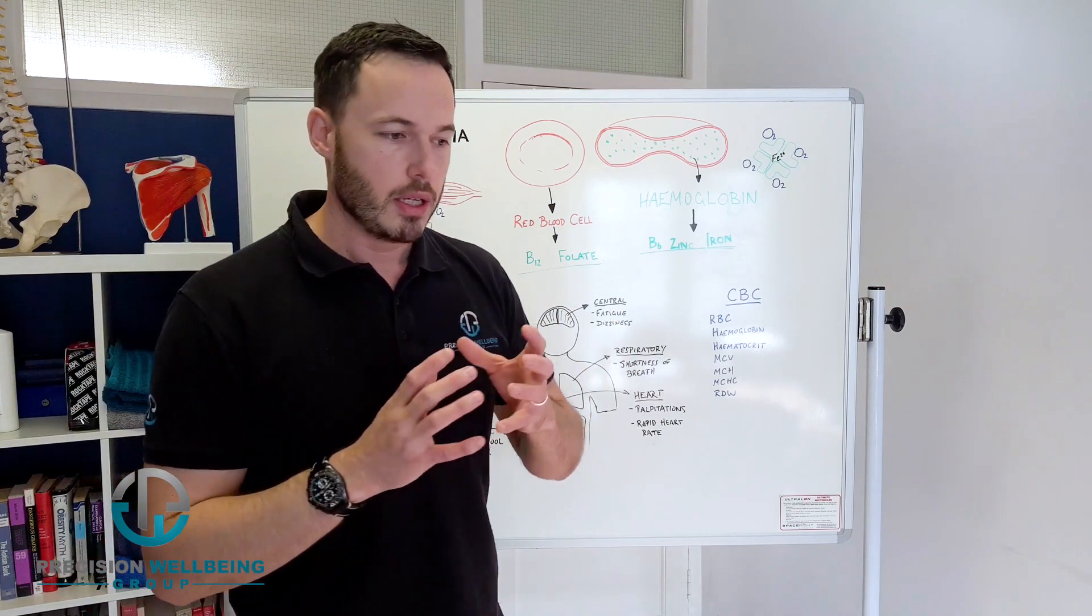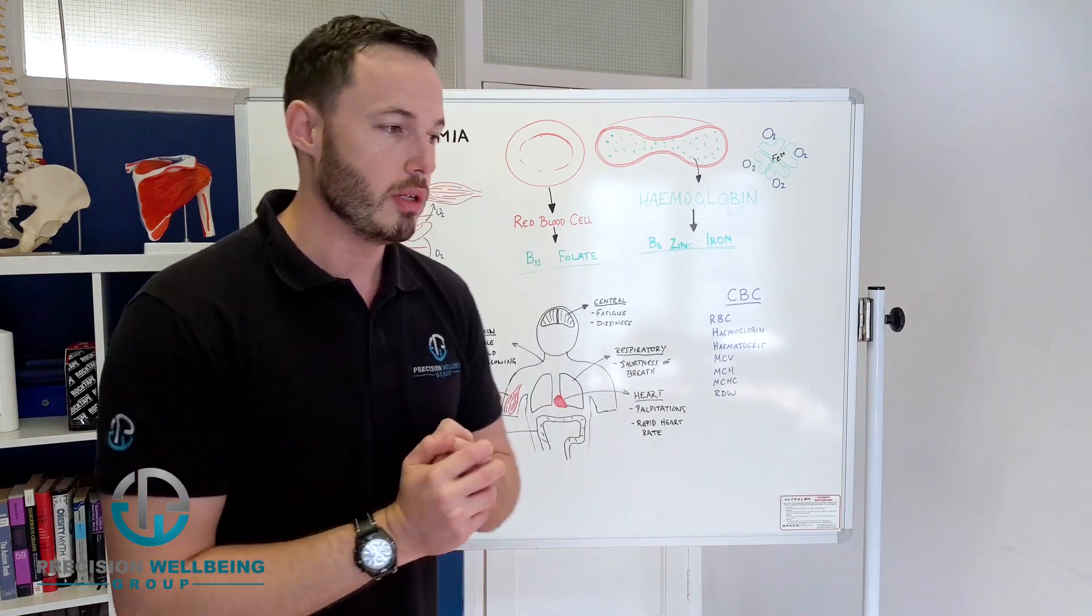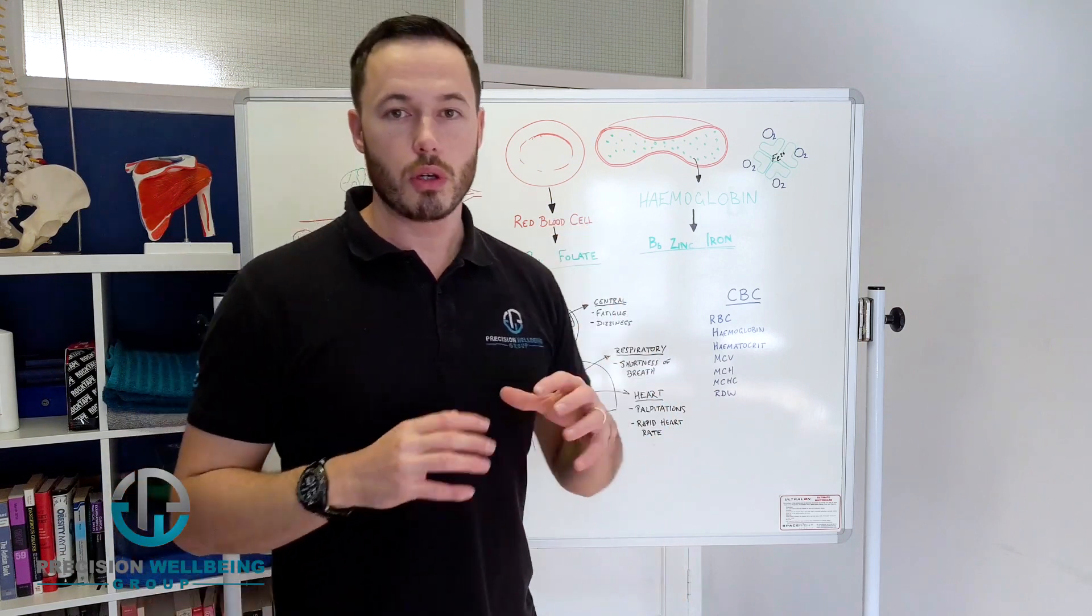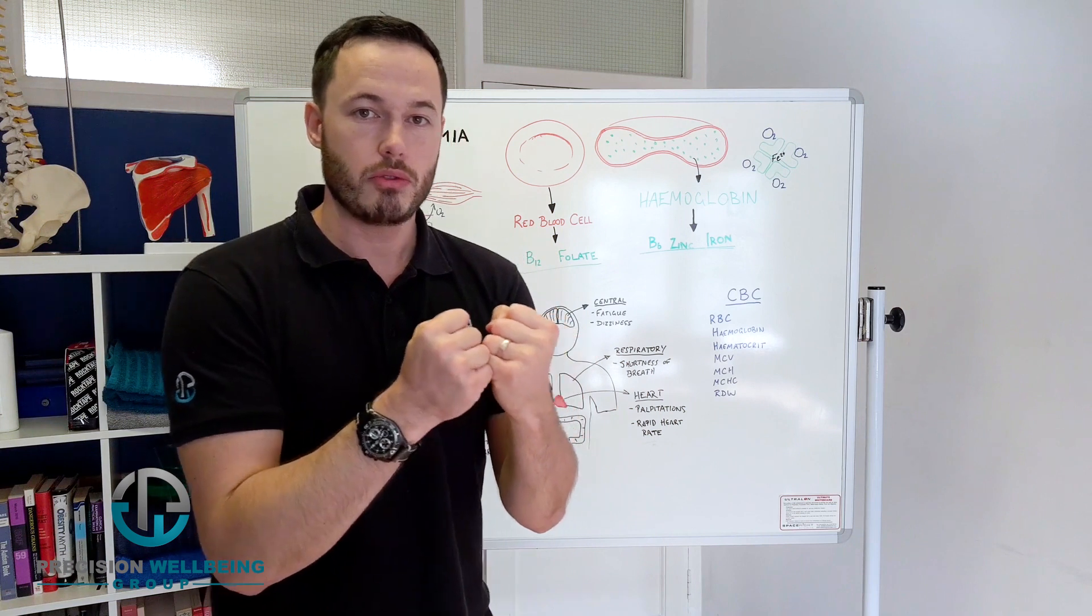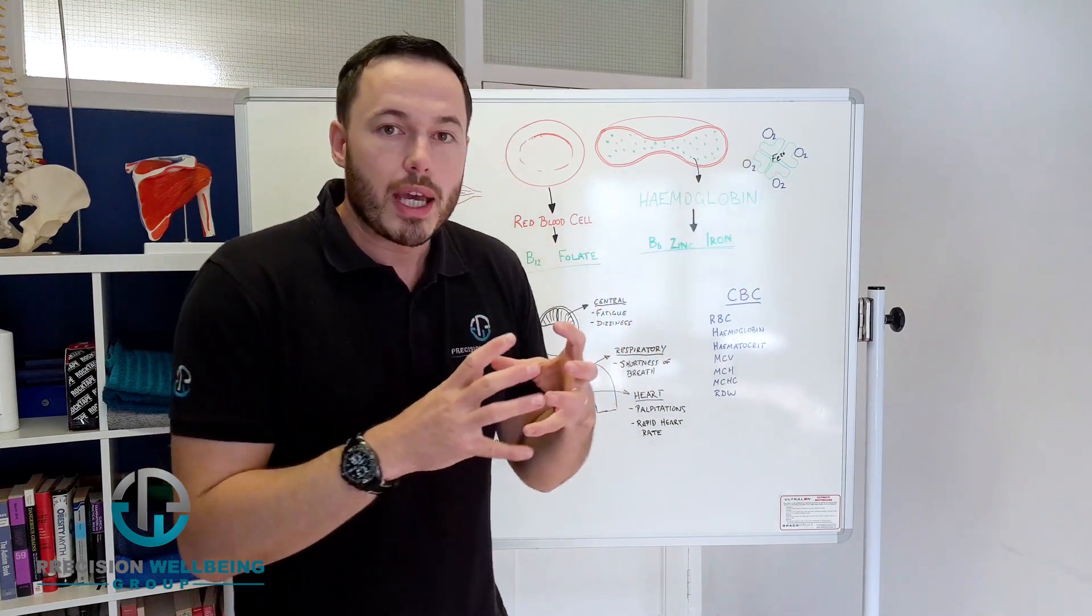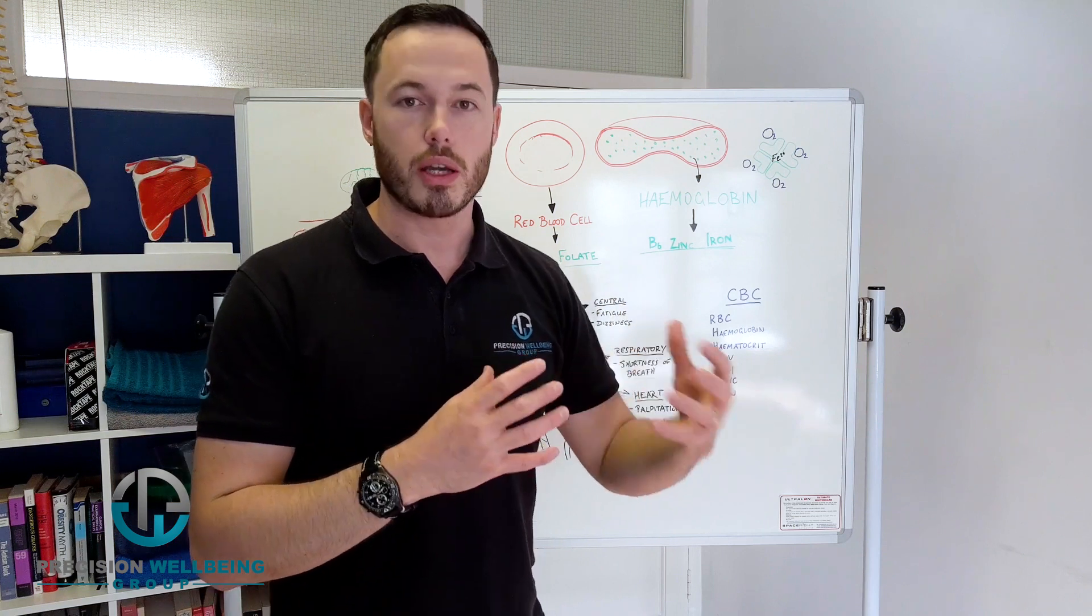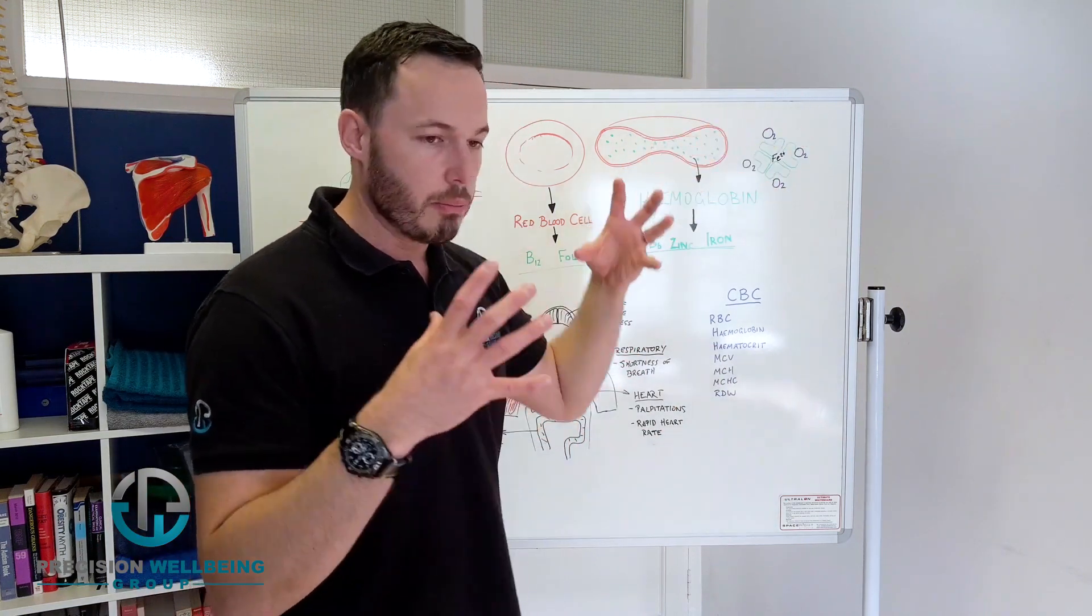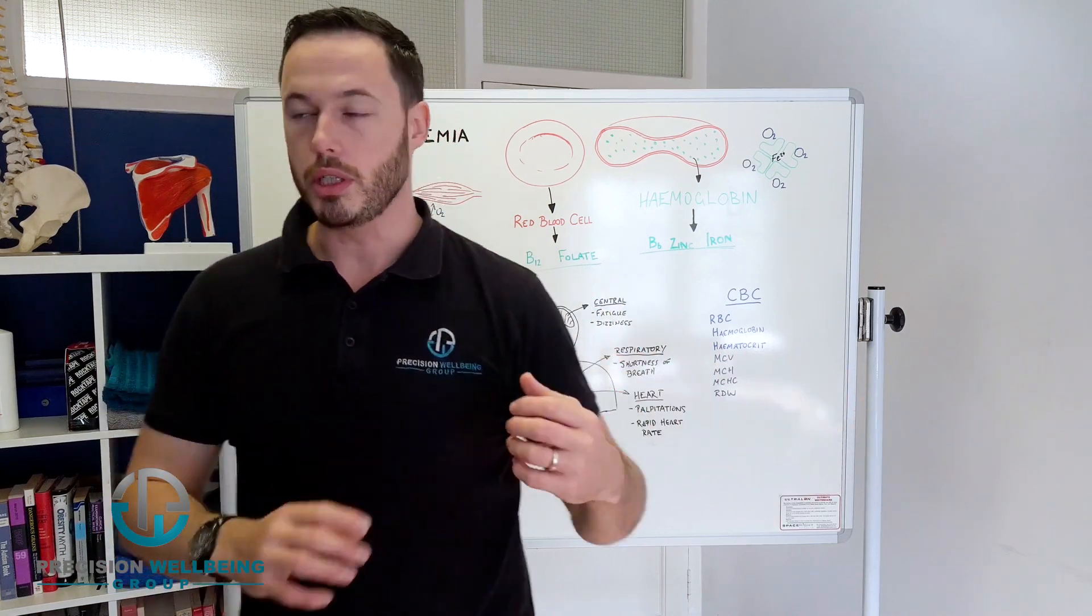Now within every red blood cell is a protein called hemoglobin, and the red blood cells are stuffed full of hemoglobin. The point of hemoglobin is to bind onto oxygen to carry that within the cells to transport it to target tissues. So hemoglobin is a protein, it binds onto oxygen and it carries oxygen within the red blood cells around the body.